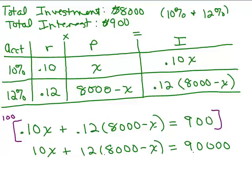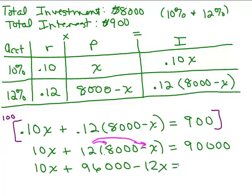All right, so now I don't have any decimals so it's a little bit easier to solve. So I have 10X plus here we have the distributive property. So, I have to do 12 times 8,000. So, remember how to do that? You do 12 times 8 which is 96 and then we append these three zeros, right? So, it's 96,000 and don't forget to distribute the 12 to the X as well. So, I'm going to have minus 12X equals 90,000.